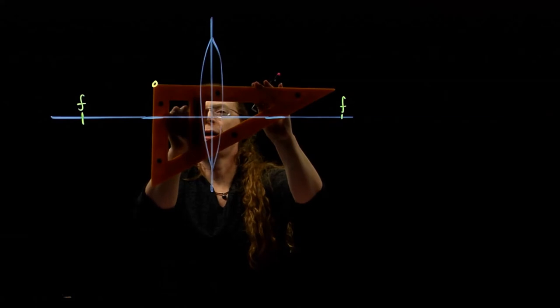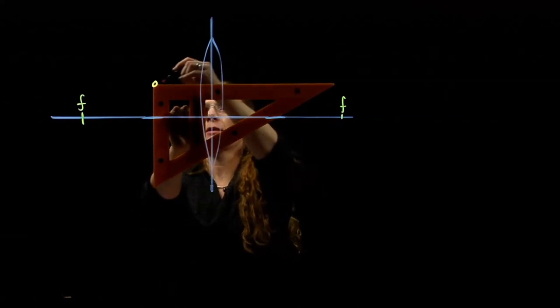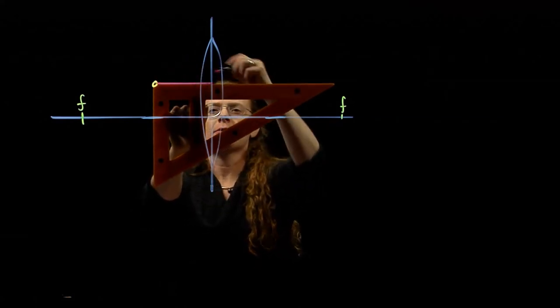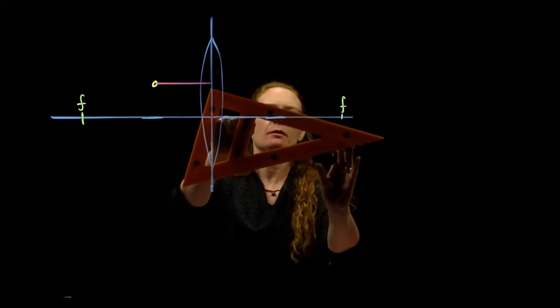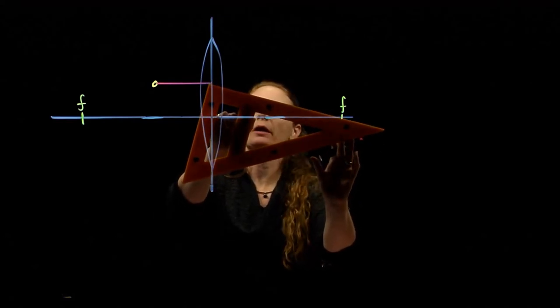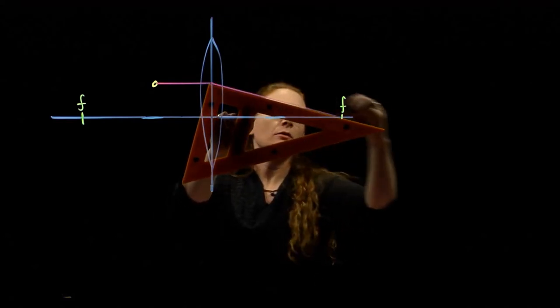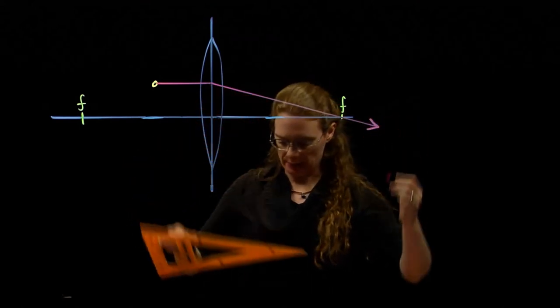We have one that goes out parallel to the axis, and then as soon as it hits that center, it goes through the focal length. Alright, so we've got one that leaves the lens like that.